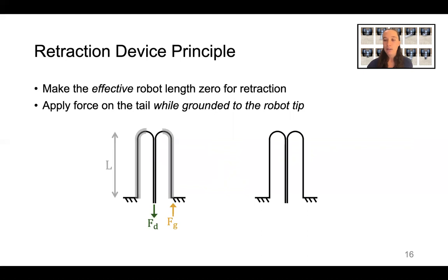We realized that we can move our device to the robot tip. It still applies force on the tail to invert the robot, but it applies its equal and opposite grounding force on the robot tip itself. In this case, the robot length that is susceptible to buckling due to this force is zero.